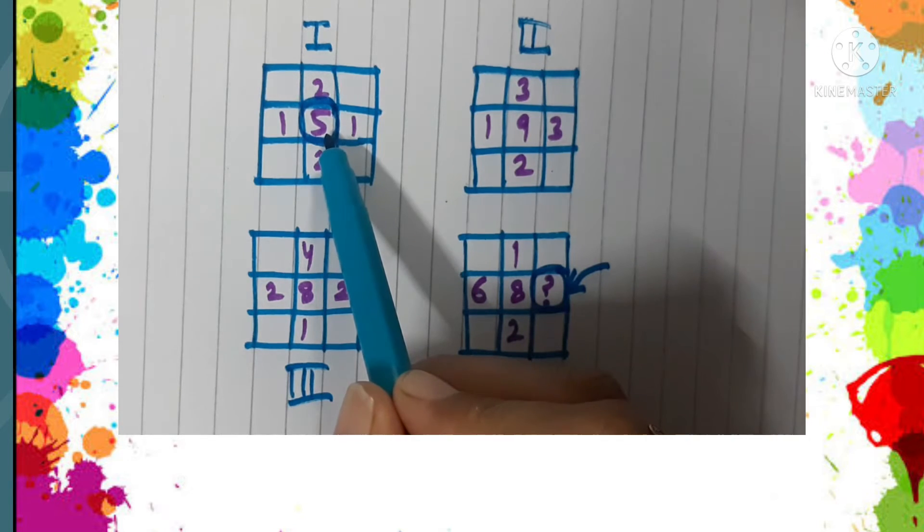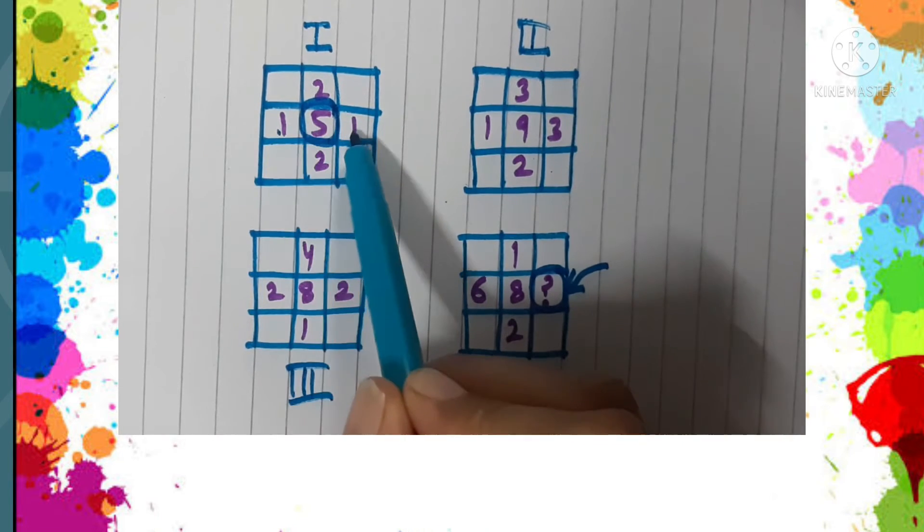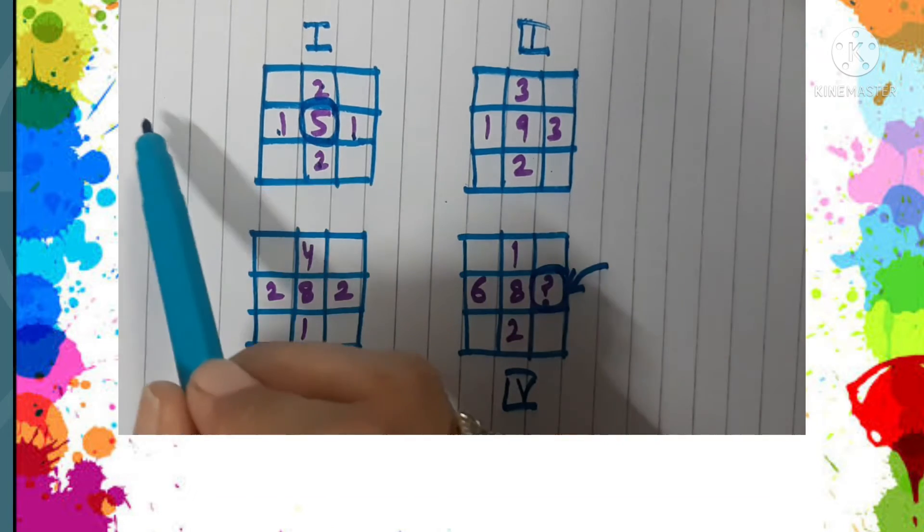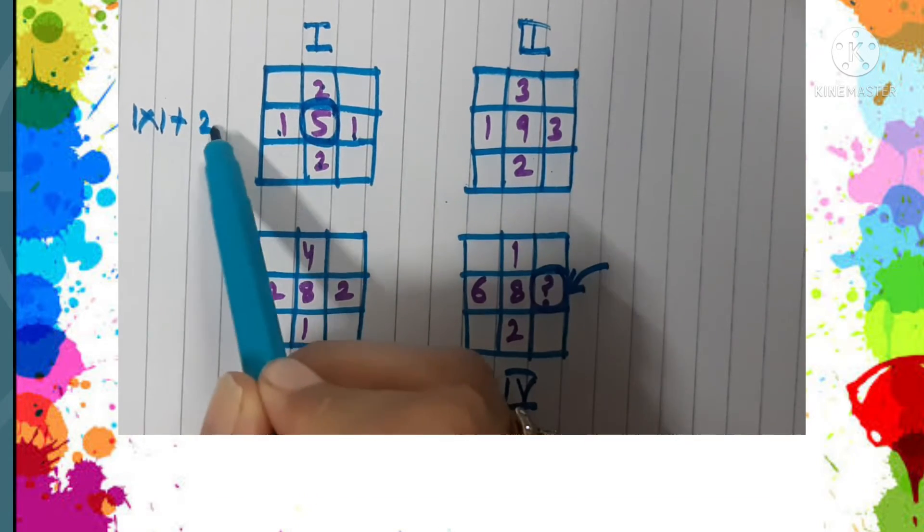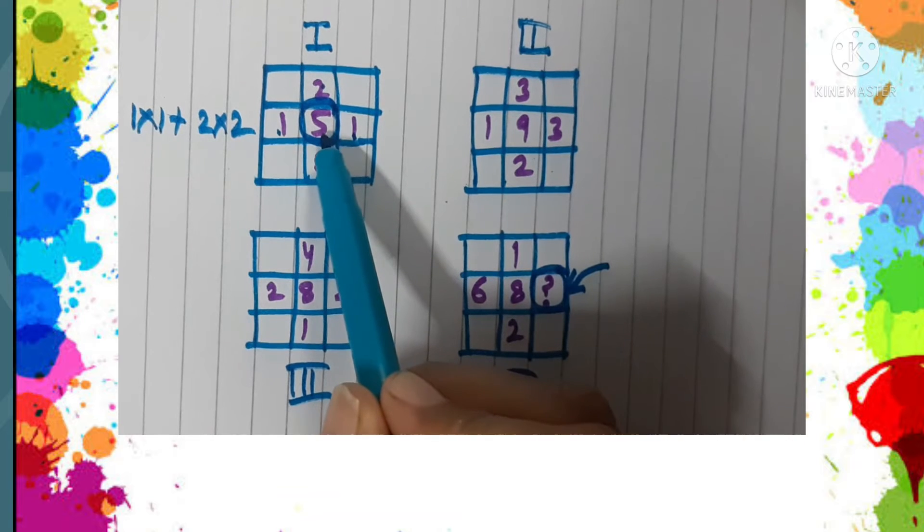And how do we get this five? One into one plus two into two, so that gives us five.